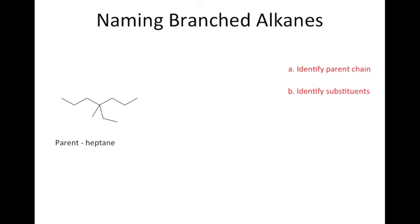The next step is to identify the substituents present in the structure. This alkane contains two alkyl substituents, an ethyl and a methyl group, directly attached to the parent chain.